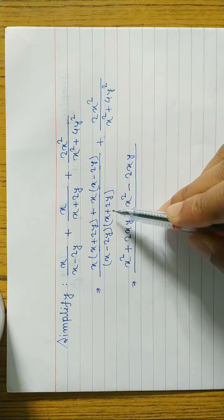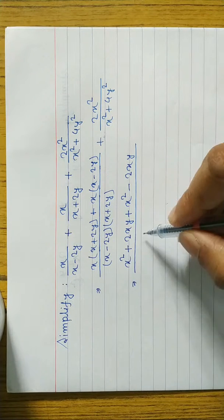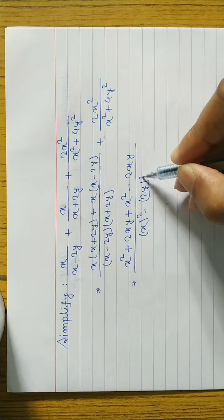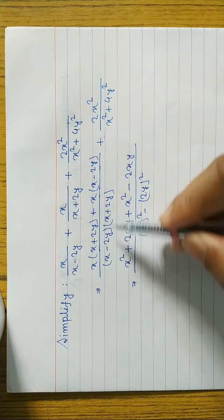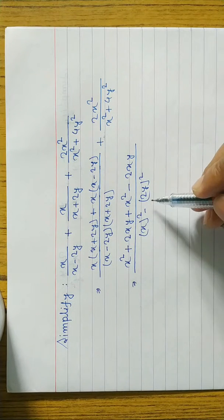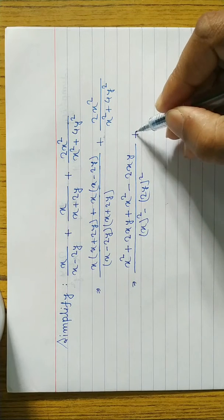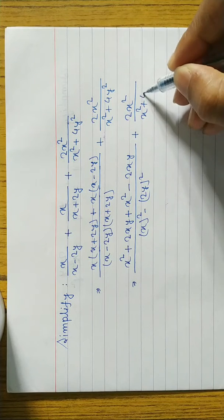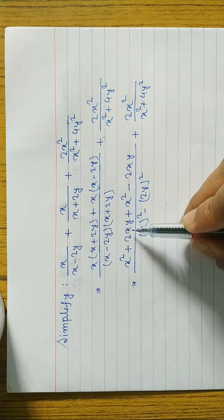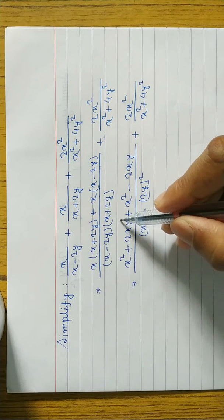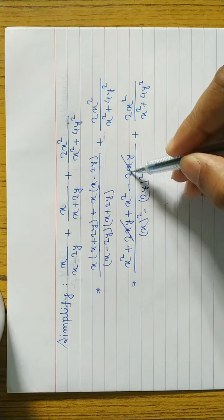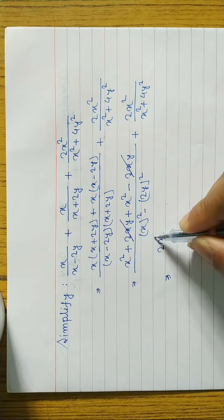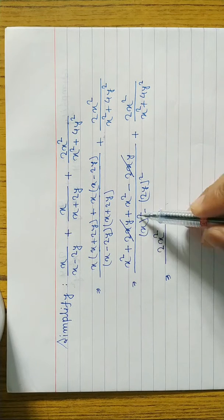In the denominator, you can see it is in the form of (a plus b)(a minus b), so we write a square minus b square, which gives x square minus (2y) whole square. Now, 2xy is positive and the other 2xy is negative, so they cancel. We are left with 2x square in the numerator, and the denominator becomes x square minus 4y square.